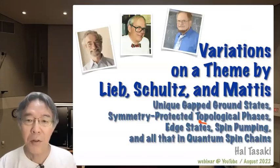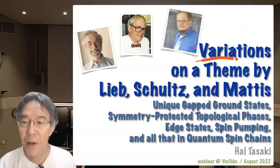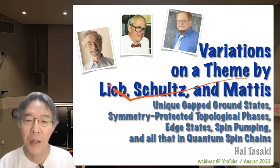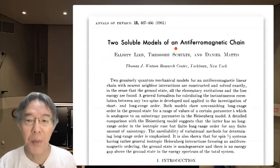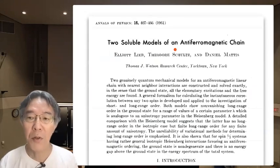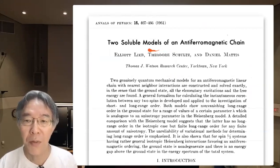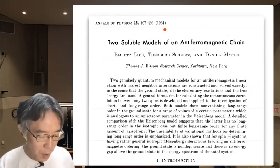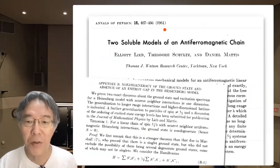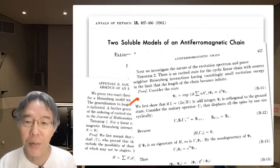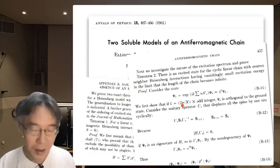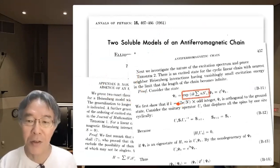The title of this webinar is 'Variations on a Theme by Lieb, Schultz, and Mattis.' This is the paper in which the main theme was introduced — a very famous 1961 paper. The main theme was introduced only in Appendix B of this paper, in the proof of Theorem 2. This innocently looking unitary operator is our main theme.